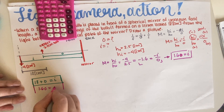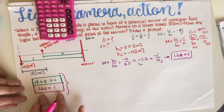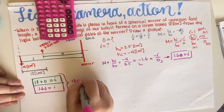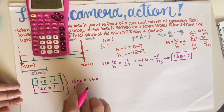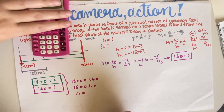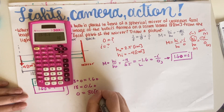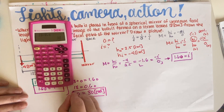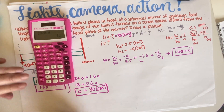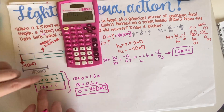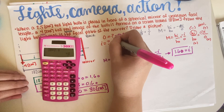So 1.6 times o equals i. I'm going to combine the two equations: both expressions are equal to i, so 18 plus o equals 1.6 times o. That gives 18 equals 0.6 times o, so o equals 18 divided by 0.6, which is 30 centimeters. Then I multiply o by 1.6: 30 times 1.6 gives i equals 48 centimeters.